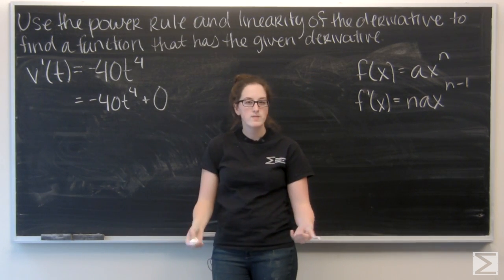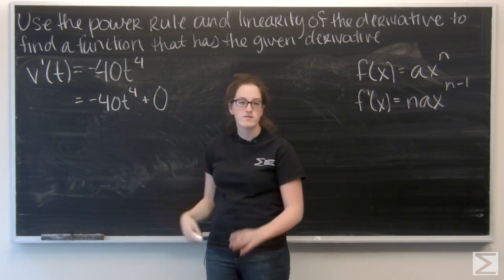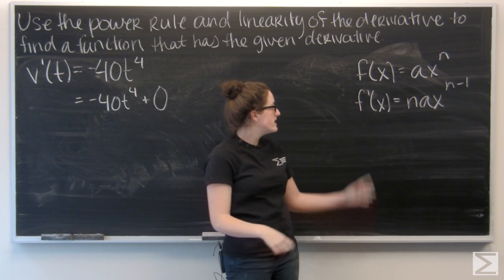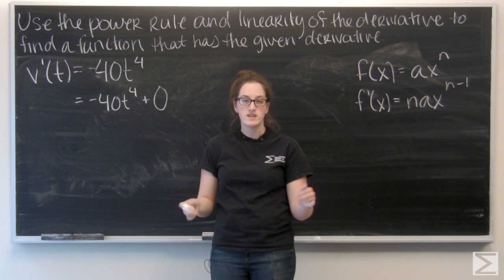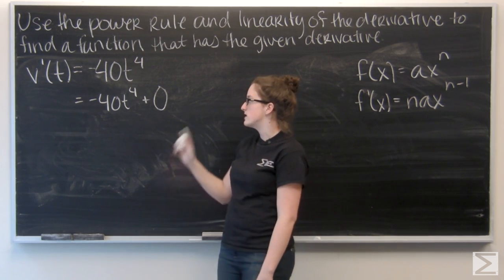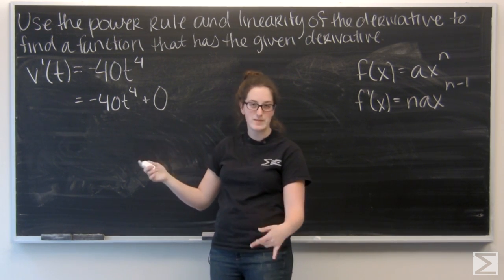So I can apply that to my derivative and work backwards. Well, the easiest thing to identify is going to be the exponent. So I know the exponent in v of t is going to be one more than the exponent of t in v prime.